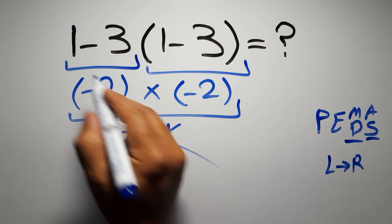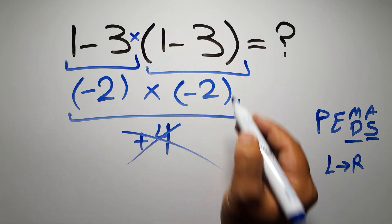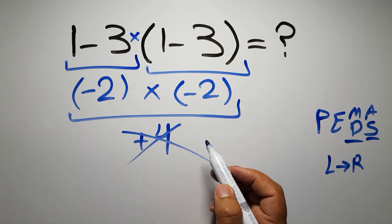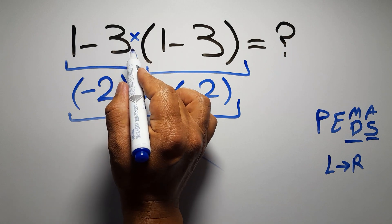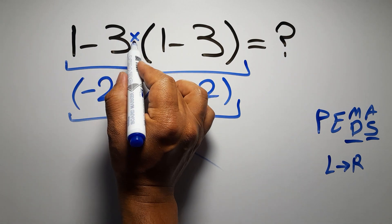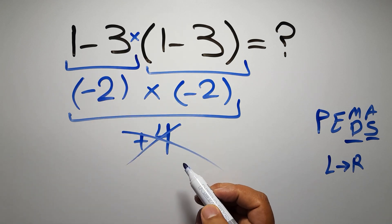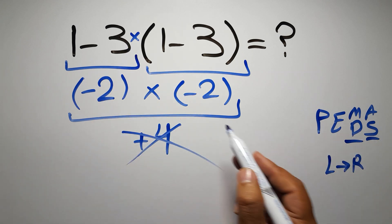In this expression we have one subtraction, one multiplication, and one parentheses. Inside this parentheses we have one subtraction. Here we have a multiplication because in mathematics when a number is placed next to parentheses it means multiplication, and we usually don't write the multiplication sign for brevity.